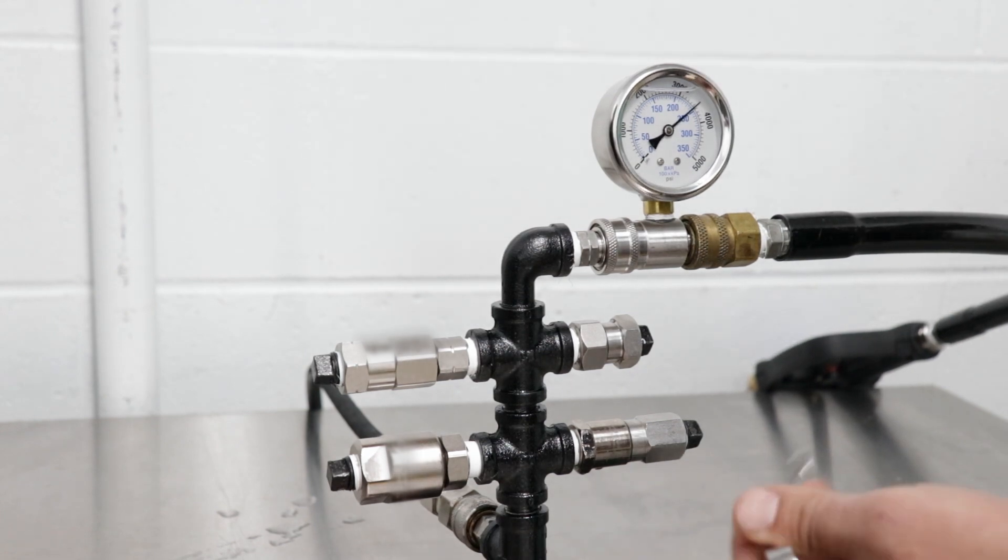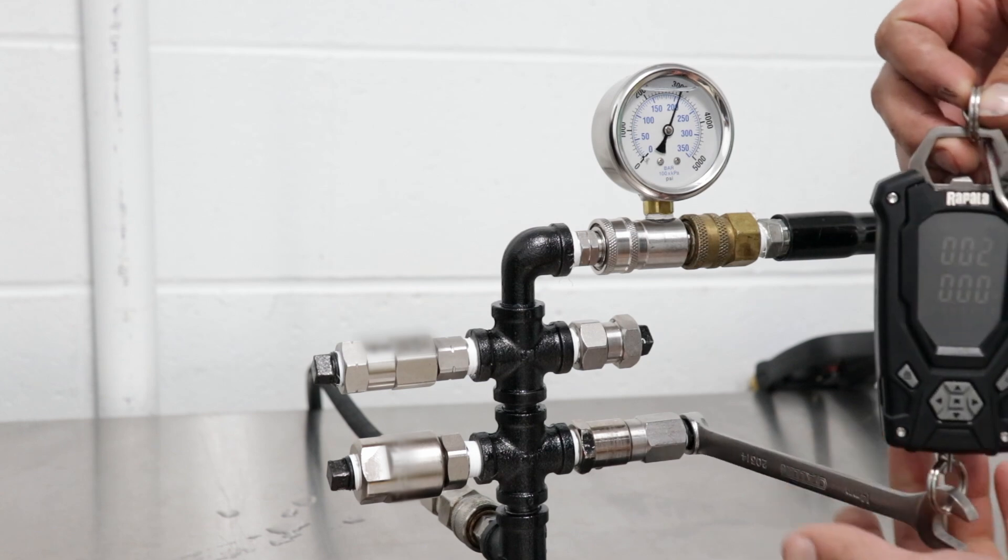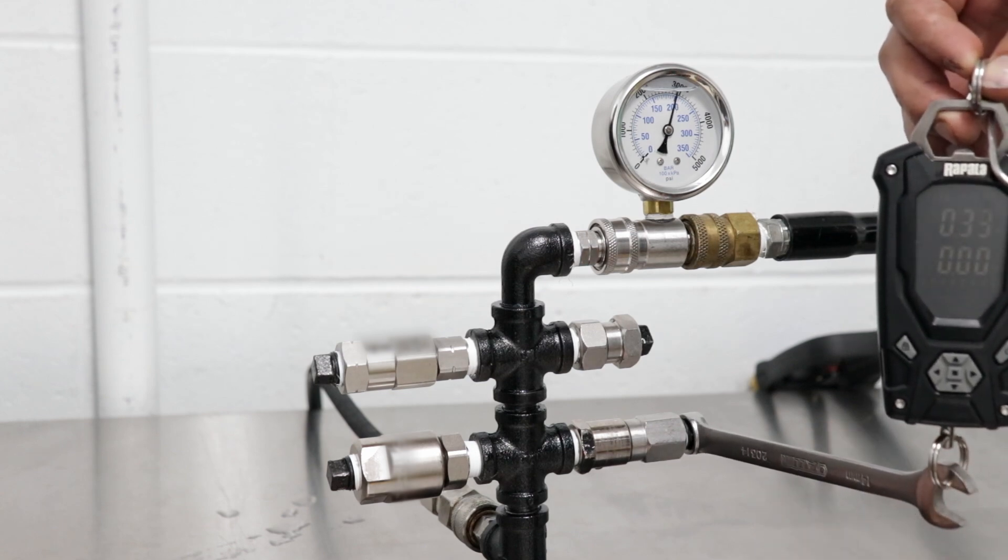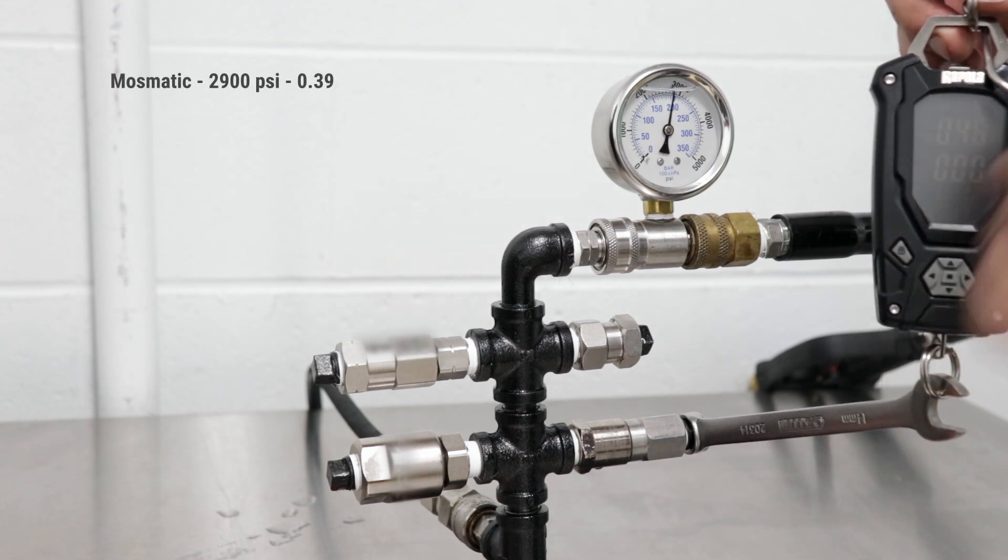We'll let the pressure run up a little bit, then it's going to drop down, and we'll start over here with the Mosmatic swivel. We're going to set this up on the wrench, and then just kind of lift. So what I'm getting on a reading for rotation is 0.39 steady on a pull.